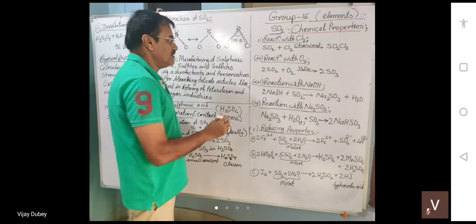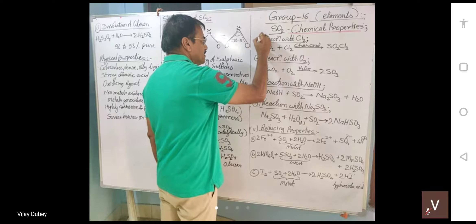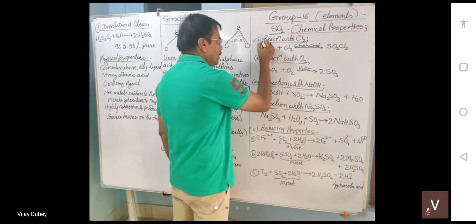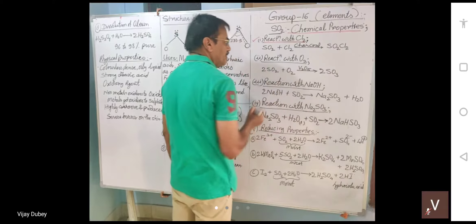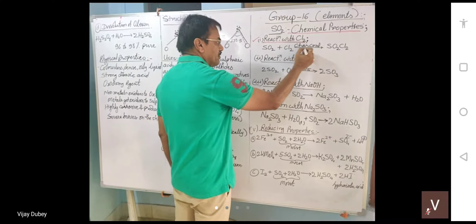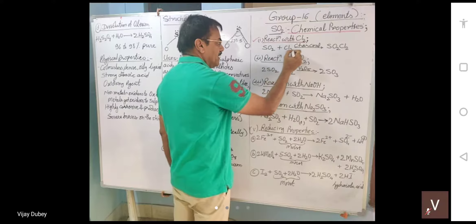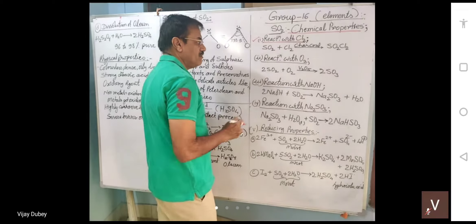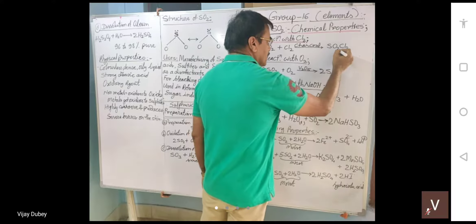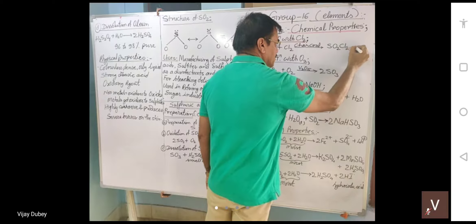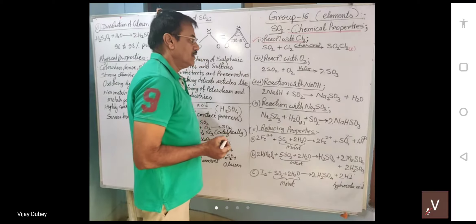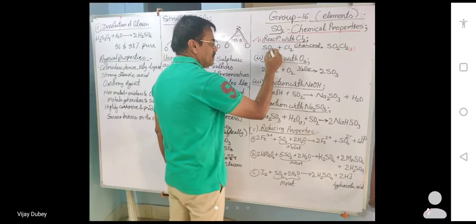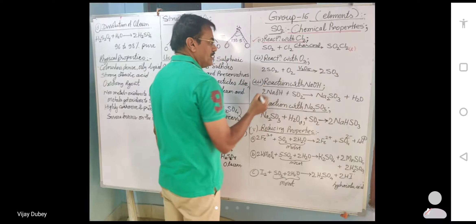The first reaction is with chlorine. Sulfur dioxide reacts with chlorine in the presence of charcoal to form SO2Cl2. This is a simple addition reaction: SO2 plus Cl2 gives SO2Cl2.